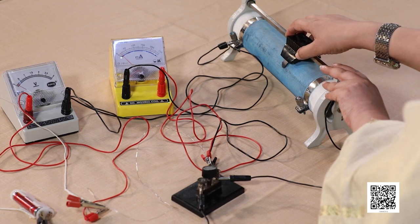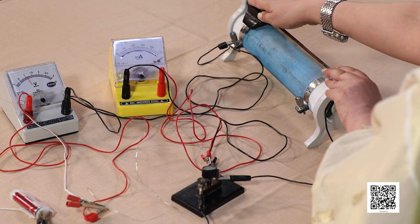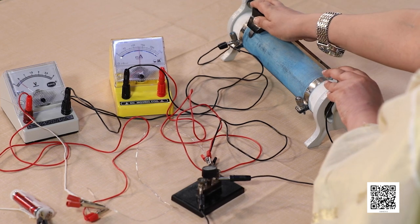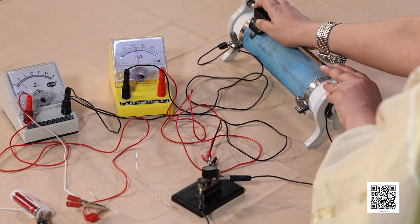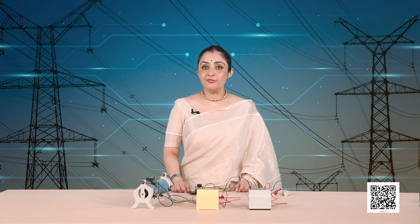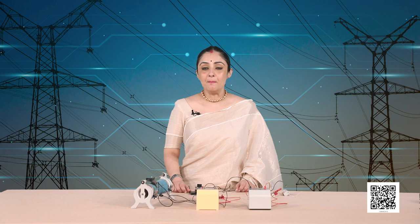Now you have to tabulate your findings. For a particular value of voltage, what is the value of current? What happens to the value of current if the voltage increases or decreases? After we tabulate, let us plot a graph between voltage and current. You will observe that the V-I graph is a straight line that passes through the origin. Remember, V by I is a constant ratio.